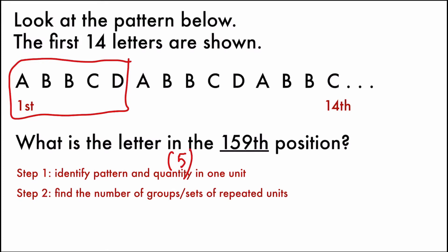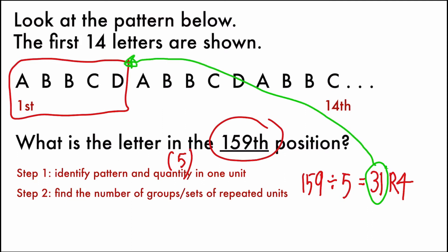Step number two, find the number of groups or sets of repeated units. So now the number is greater, which is 159. So we will use the total letters divided by the number of quantity in one unit, which is 5. And our answer is 31, with remainder of 4. So let's analyze the number a little bit. 31 refers to there are 31 groups of this repeated A, B, B, C, D, A, B, B, C, D and so forth. And we have four remainders, which are left alone, that do not form a group.